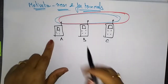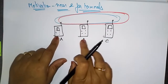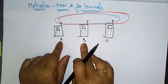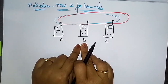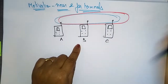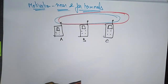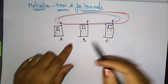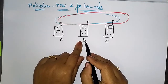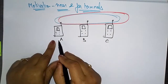A and B are both sending with the same transmission power. Signal strength decreases proportional to the square of the distance — as already explained. Because of this, B's signal drowns out A's signal.